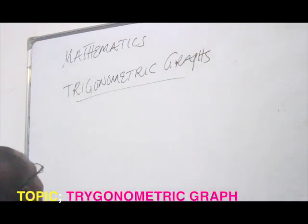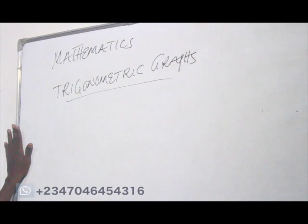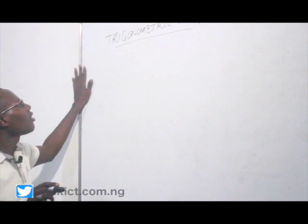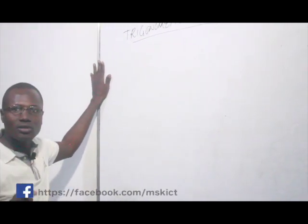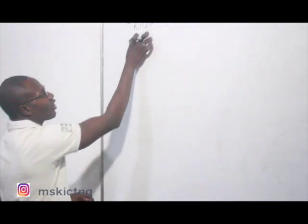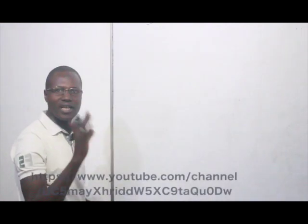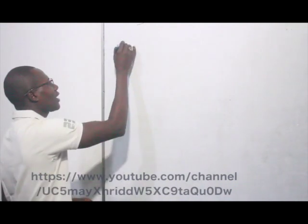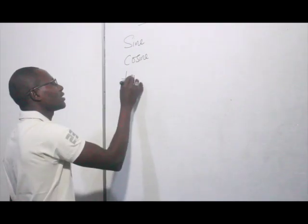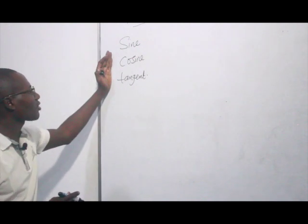First of all, we have to know what is trigonometry. Trigonometry is the basic function that relates the angle of a right angle to the ratio of the length of sides. Under this basic trigonometry, we have three different types, which are the sine, the cosine, and the tangent. These are the basic trigonometric functions.